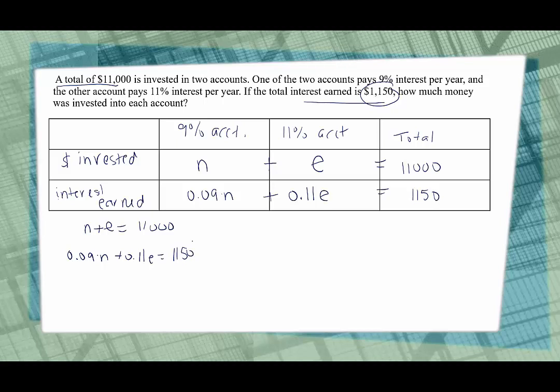Now what we might want to do is if you want to get this out of decimals you can. They both go to the hundredths place, so I would multiply all three terms by 100. Move those decimals over, we get 9N plus 11E is equal to 115,000.